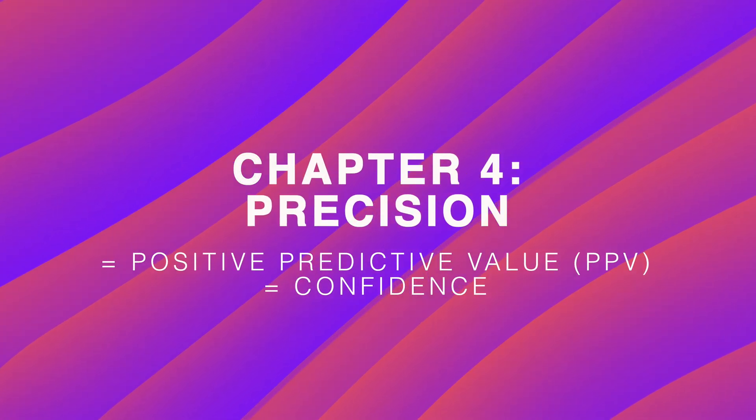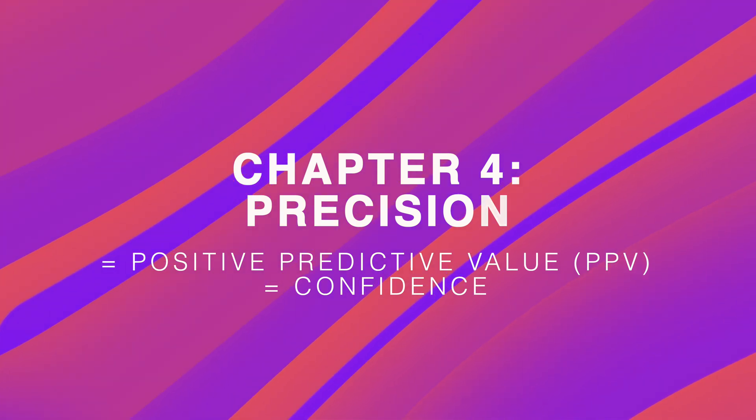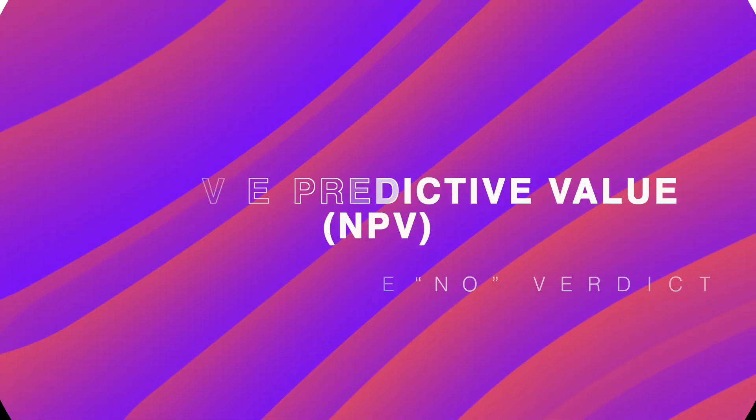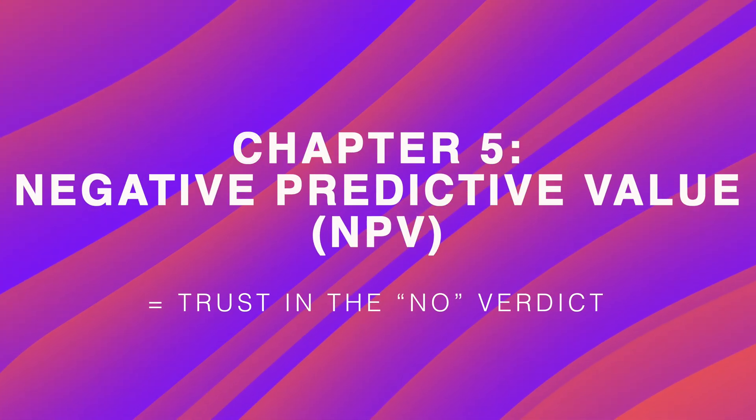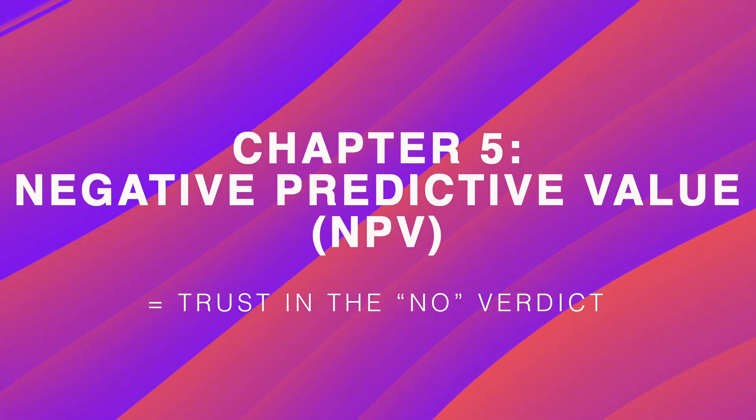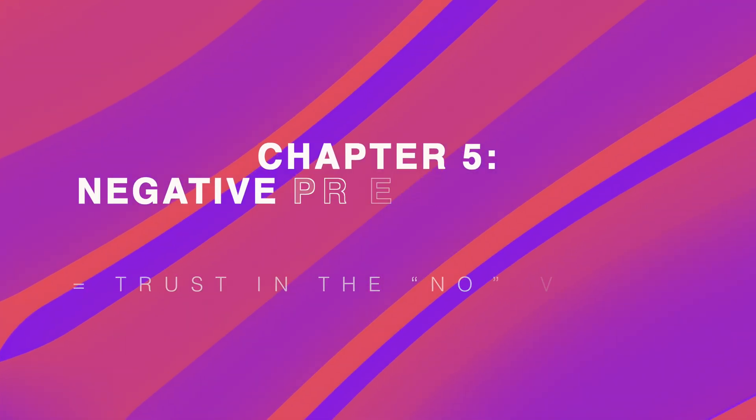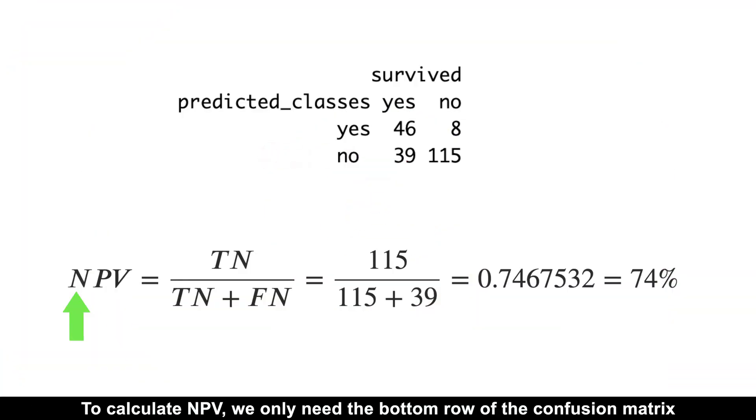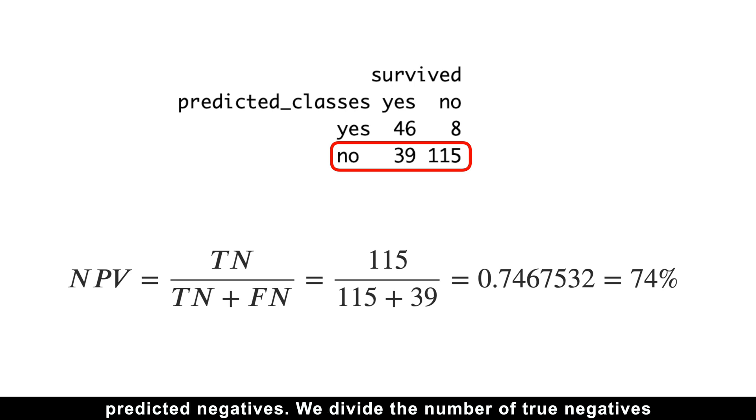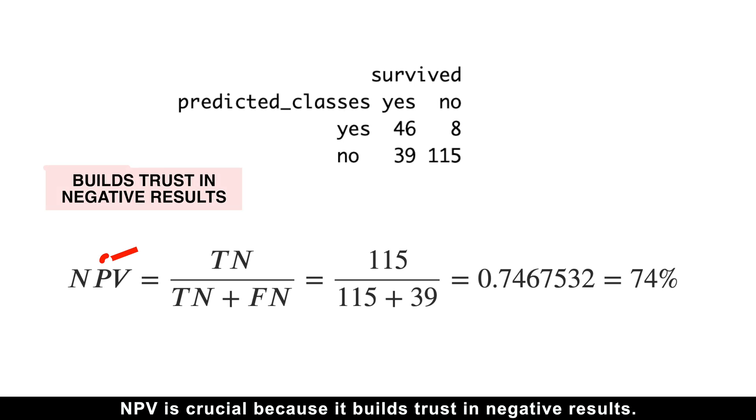What is easy to remember is that when there is a positive predictive value, there should also be a negative predictive value, right? Indeed, the negative predictive value tells us how many negative test results are accurate. To calculate negative predictive value, we only need the bottom row of the confusion matrix, predicted negatives. We divide the number of true negatives by the total number of negative predictions.